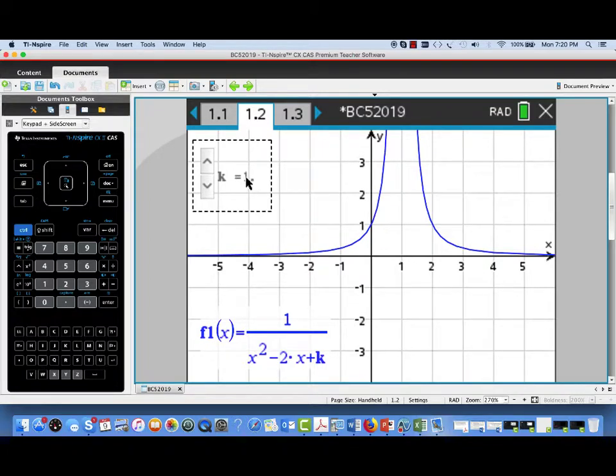Our initial value of k equals 1, if you look at that denominator, that would be x squared minus 2x plus 1, or x minus 1 quantity squared, and that's why we're having this vertical asymptote at x equal 1.